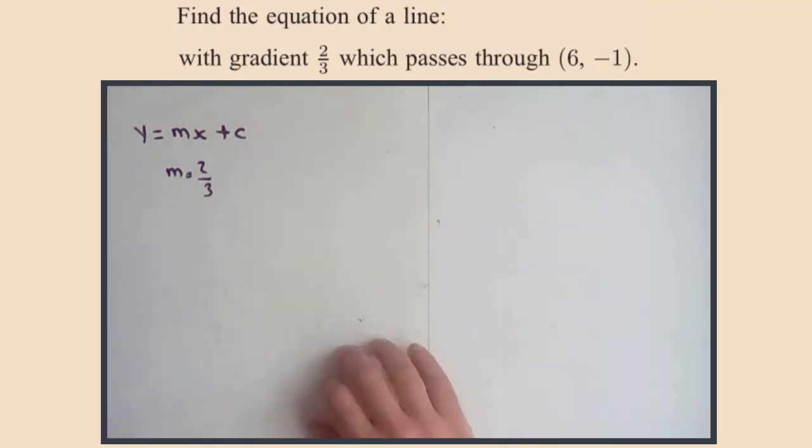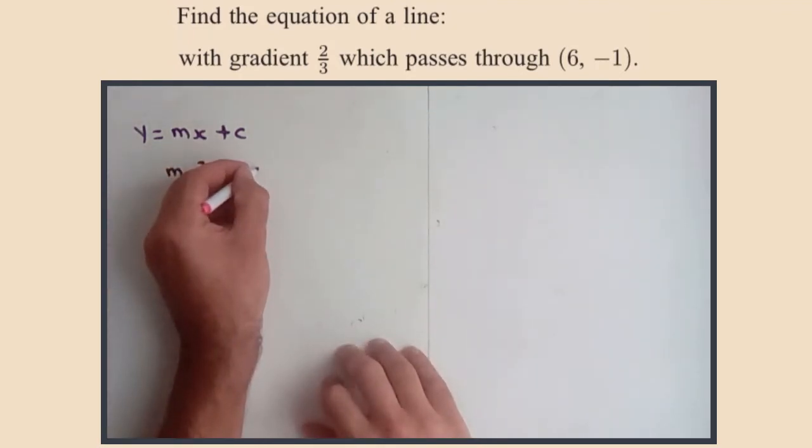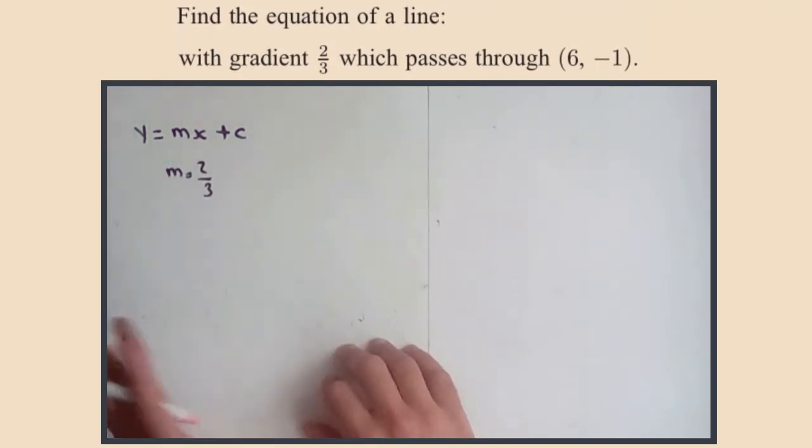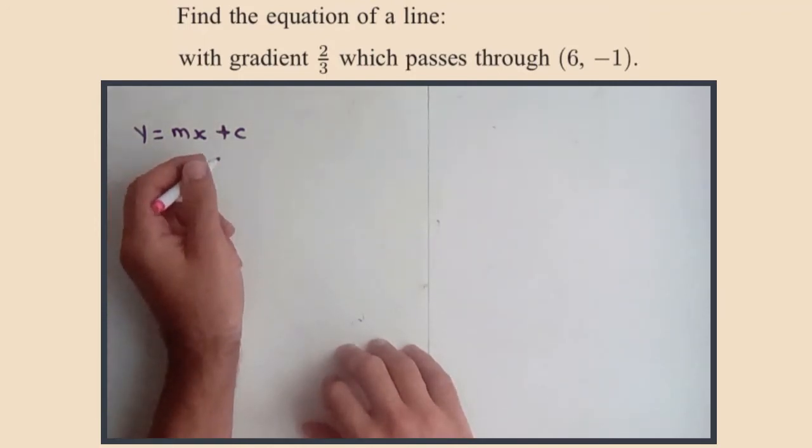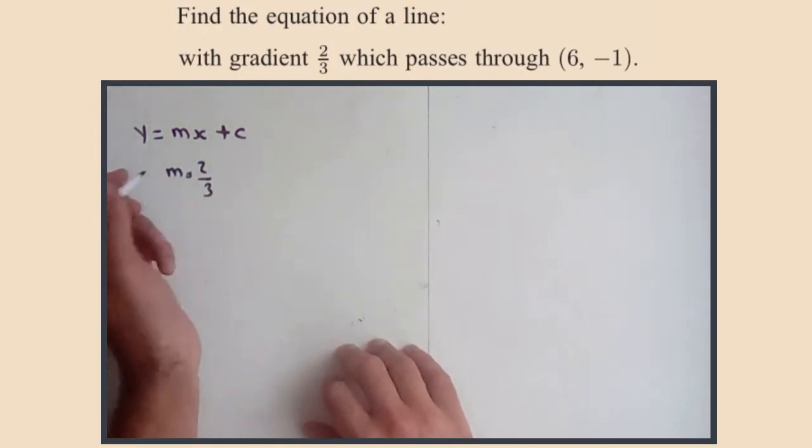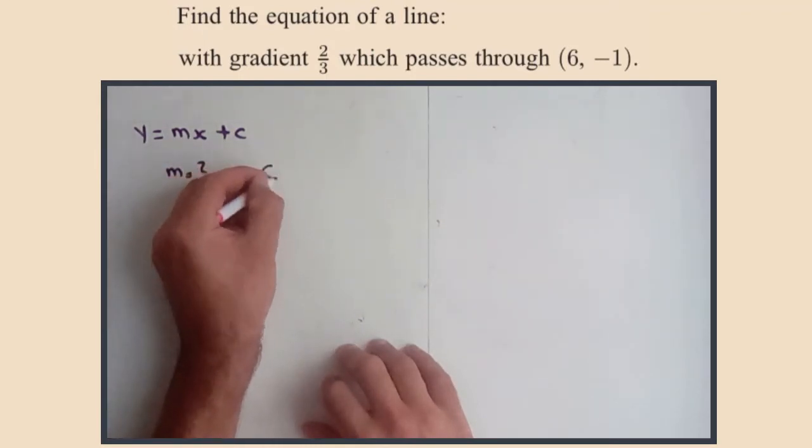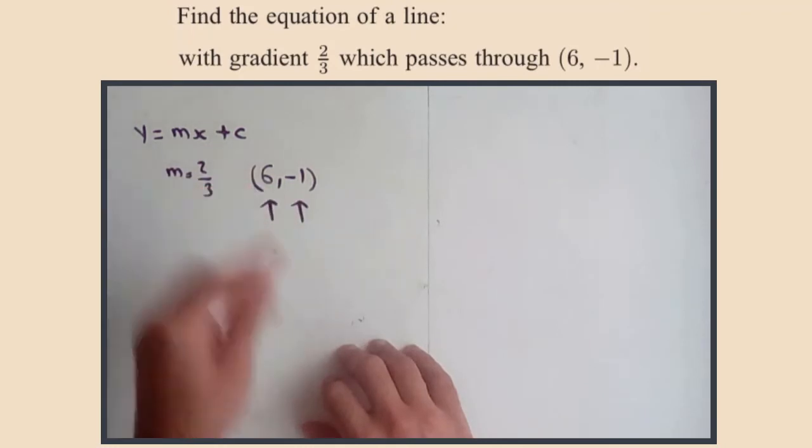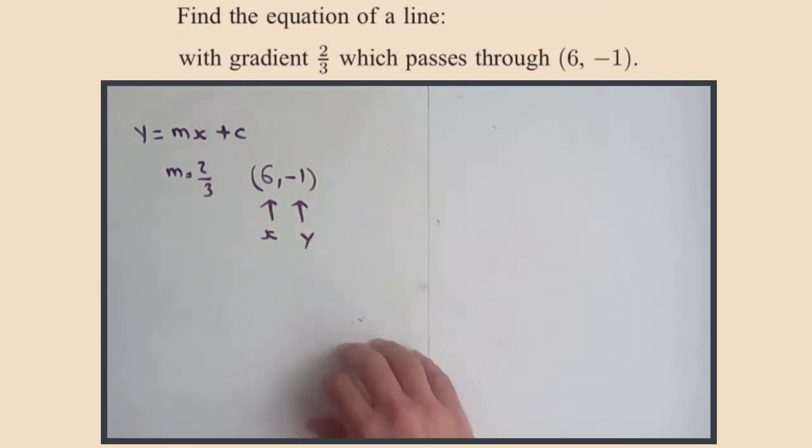So we know it passes through (6, -1). What we can do, because this equation has to work everywhere on the line, we can substitute the six for the x and the minus one for the y. So if I write that down: (6, -1). Well, this is a point because we know it lies on the line. Passes through it does tell us that this can be our x and this can be our y.